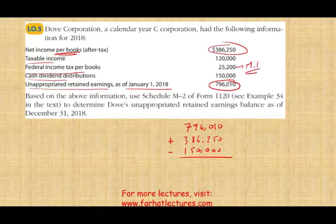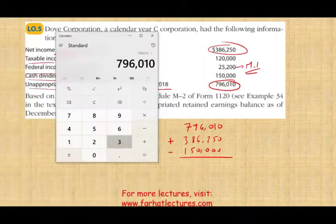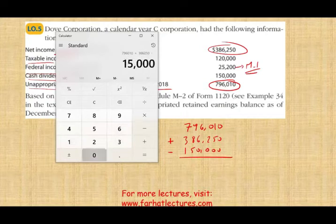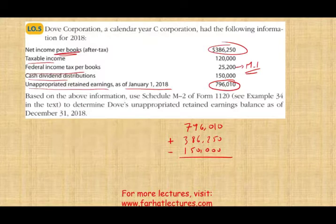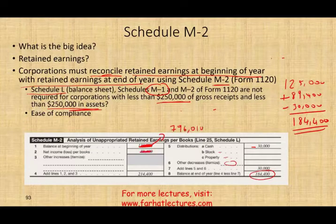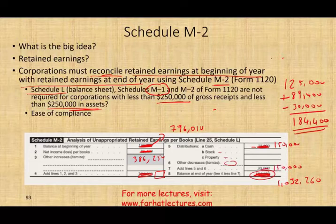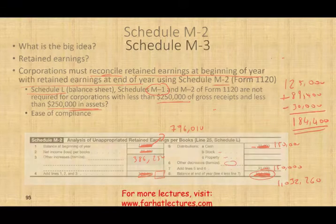Using the formula: beginning unappropriated retained earnings of $796,010 plus net income per books of $386,250, minus dividends of $150,000, gives us ending retained earnings of $1,032,260. On the M2 schedule, $796,010 is the beginning balance, $386,250 is net income per books, and we deduct dividends of $150,000. Our final answer is $1,032,260. That is basically Schedule M2.